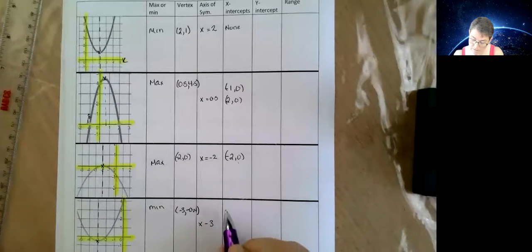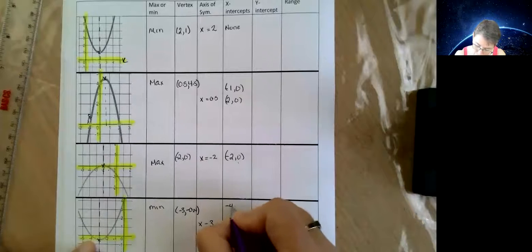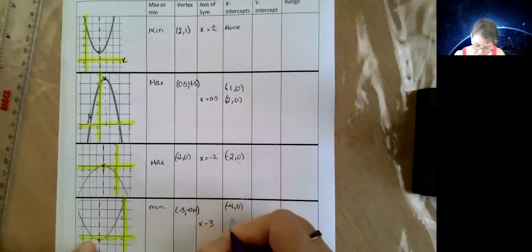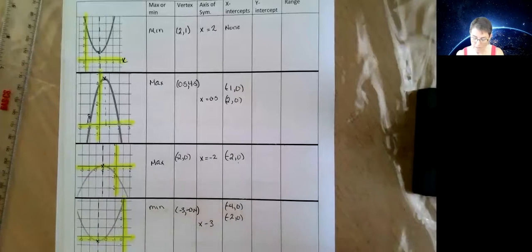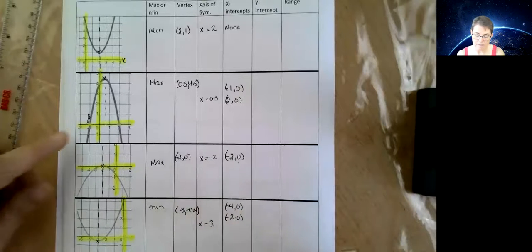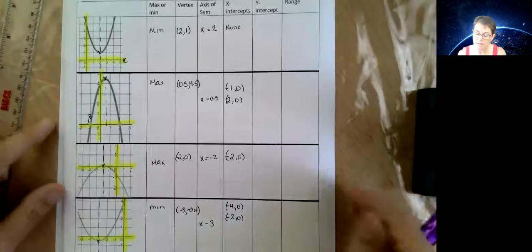Alright, this one minus 4, 0 and minus 2, 0. And there we go. Those are all the x intercepts. So where they cross the x axis.